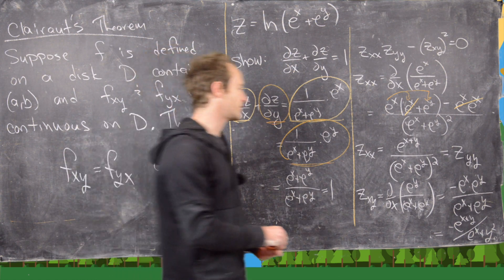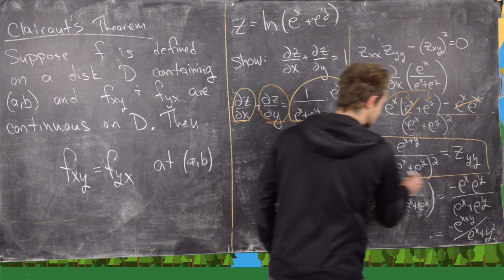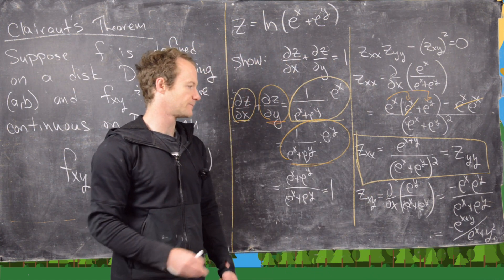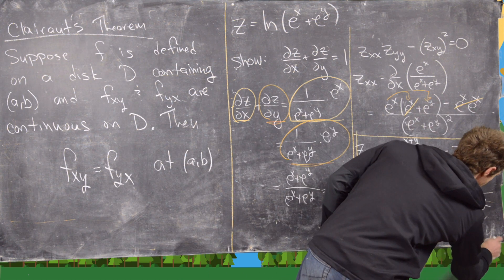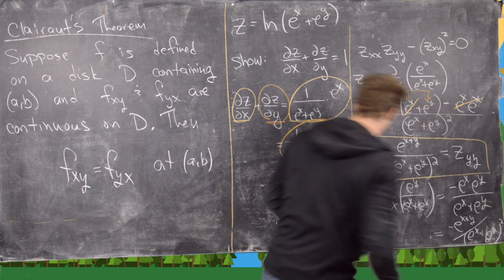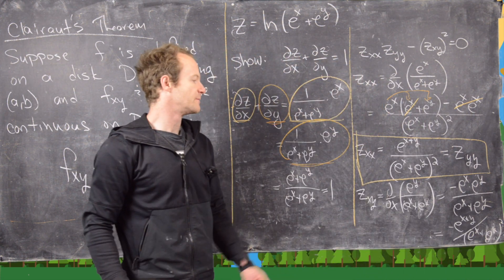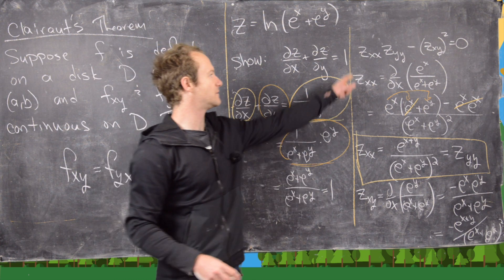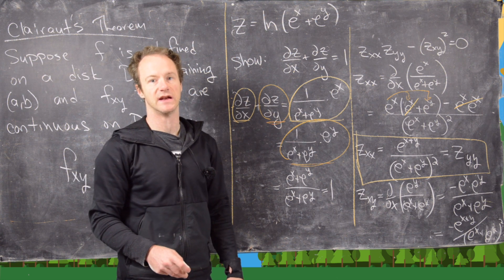So we have z_xx = z_yy = e^(x+y) / (e^x + e^y)², and z_xy = −e^(x+y) / (e^x + e^y)². Putting them together in the expression z_xx · z_yy − (z_xy)², I'll leave it to you to verify that this equals zero. That's a good ending point.